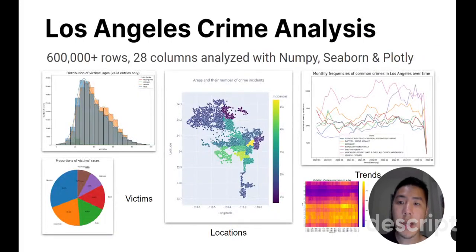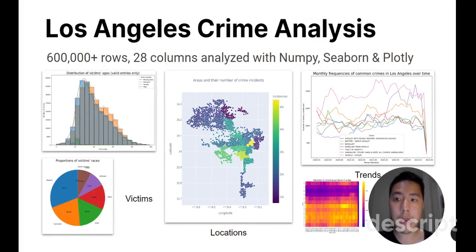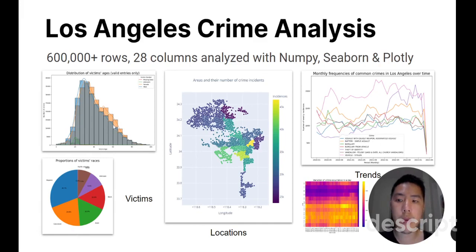The first is a data analysis project on criminal activities in Los Angeles. This is real data from the police department of the city, with more than 600,000 rows and 28 columns. I used libraries like NumPy, Pandas, and Seaborn to clean, transform, and visualize the data. I tried to answer questions including which crimes were most popular, where they happened most frequently, and who were the most vulnerable. Two interesting insights: identity theft is the new rising crime, and victims differ mostly by race rather than by gender.